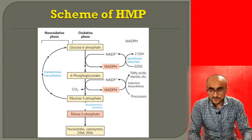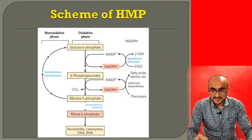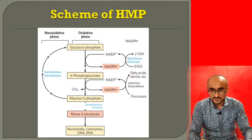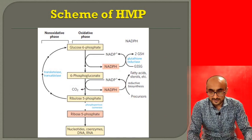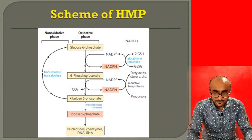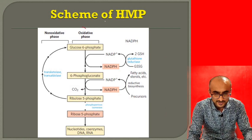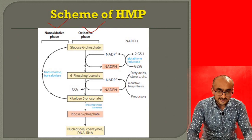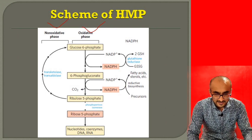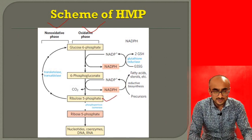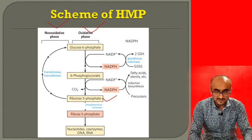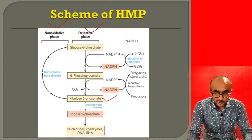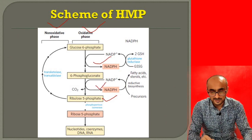The pentose phosphate pathway is an alternative way of glucose consumption. It consists of an aerobic phase and an anaerobic phase, also called the oxidative phase and non-oxidative phase. In the oxidative phase, glucose-6-phosphate is converted into ribulose-5-phosphate by dehydrogenation and decarboxylation reactions, and as a result, two NADPH molecules are synthesized from two NADP+.